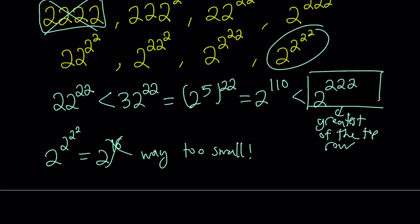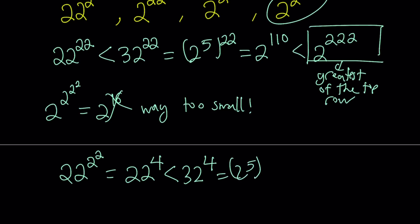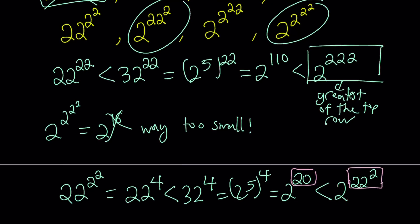Let's look at the first number from the left in the bottom row: 22 to the power 2 squared, which means 22 to the fourth power. Comparing this to a power of 2 — using 32 again — this is less than 32 to the fourth power, which is 2 to the fifth to the fourth, which is 2 to the power 20. Now I'll compare it to the second number in the bottom row. Since 22 is much smaller than 22 squared, and they share the same base, all I need to do is compare their exponents — and it's clear this number is less than that one.